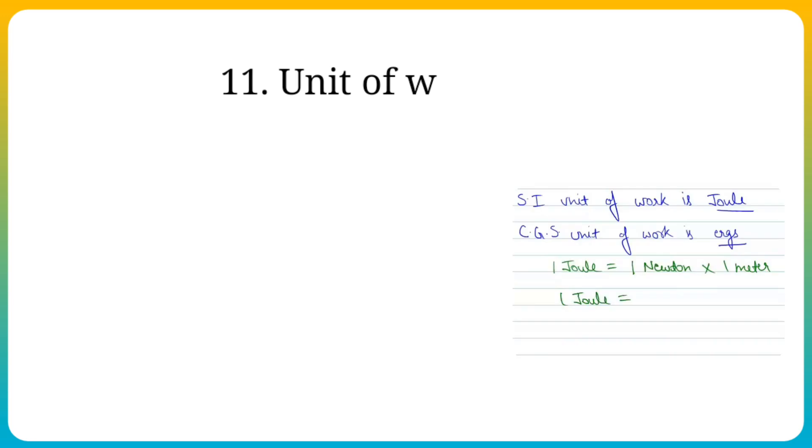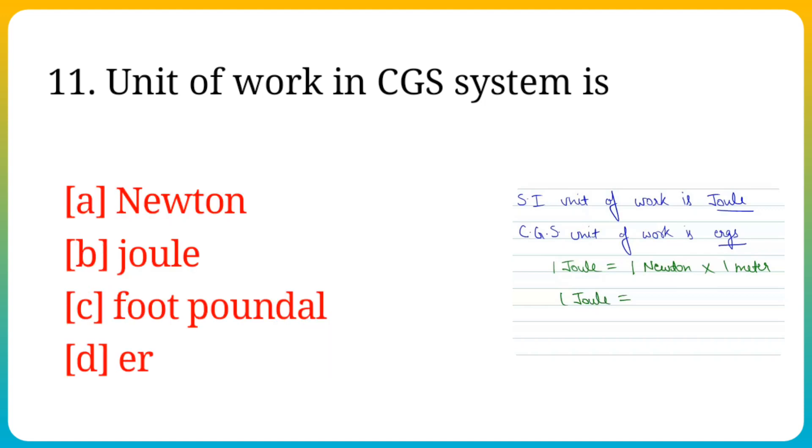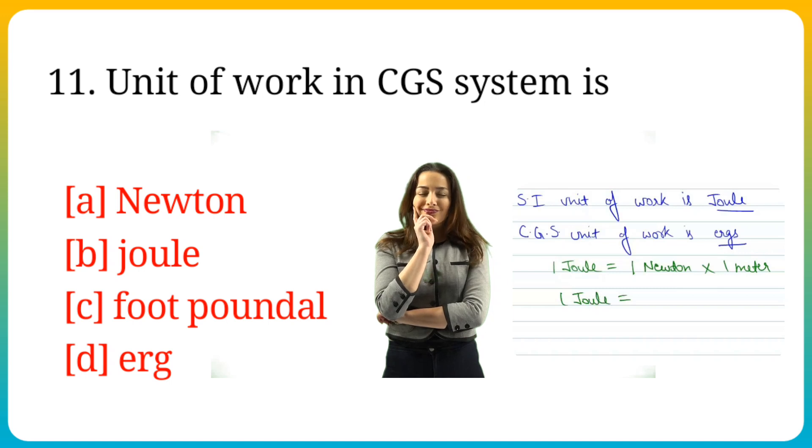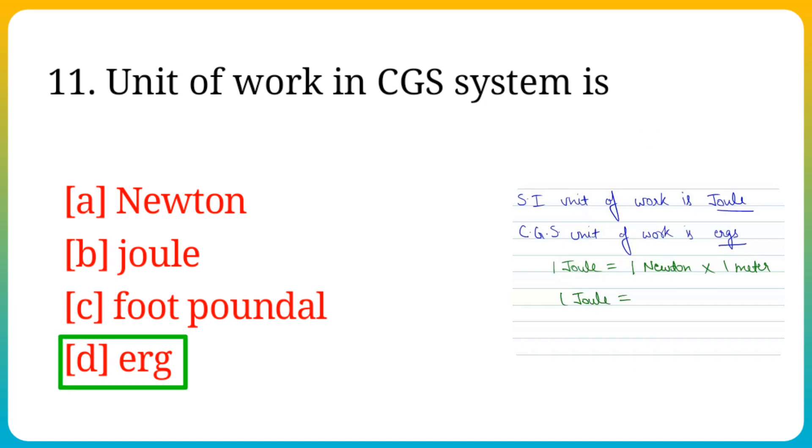Question number 11. Unit of work in CGS system is? Options are: A. Newton, B. Joule, C. Volt, D. Erg. Answer is option D. Erg.